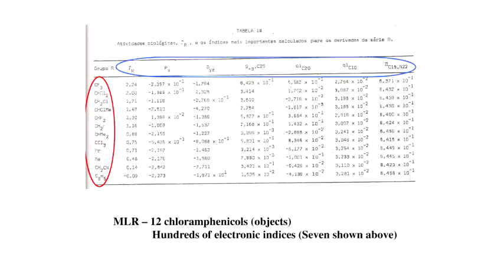They changed the substituent on the chloramphenicol molecule, leaving the characteristic nitro group on the benzene ring fixed in their study. They studied 12 different chloramphenicols and calculated hundreds of electronic indices. We have programs nowadays, not only in quantum chemistry but even in statistics, where you put a few numbers in and a thousand or more numbers come out. And that's what happened in those days.